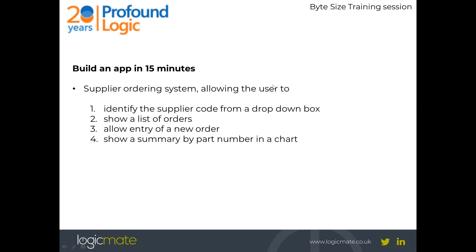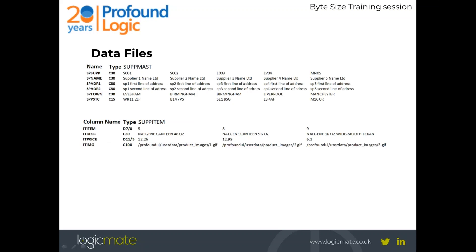Just quickly — the data files involved: we've got a supplier master file called SUPMAST, pre-loaded with up to five suppliers including address, postcode, and so on. These are the field names within SUPMAST. It's important you see this because I'll be making references to these — they're all character 30 apart from the postcode which is character 15.